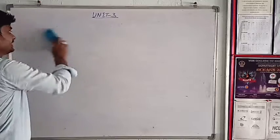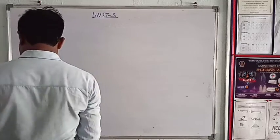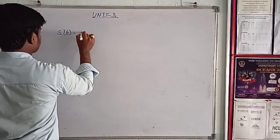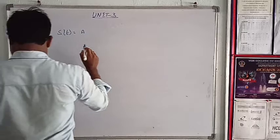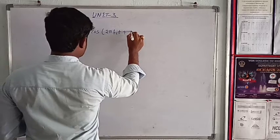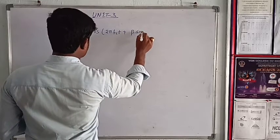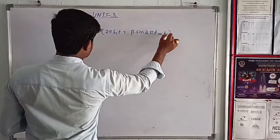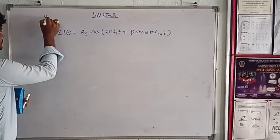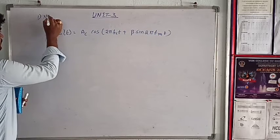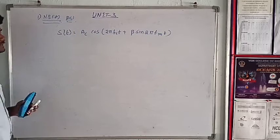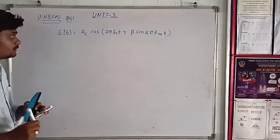What is the standard equation of FM? S of t equal to AC cos 2 pi FC t plus beta into sin 2 pi FM t. This is the standard equation of FM.